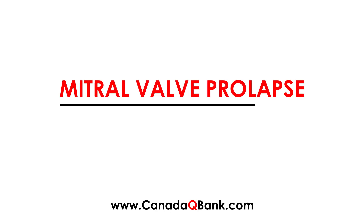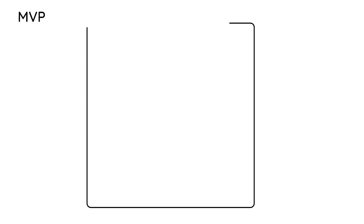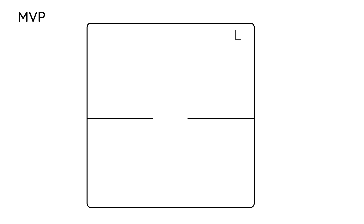Mitral valve prolapse, abbreviated MVP, is the topic. I'm going to draw two chambers of the heart — the left atrium and the left ventricle. The connection between them involves a valve called the mitral valve. The mitral valve is a bicuspid valve with two flaps.